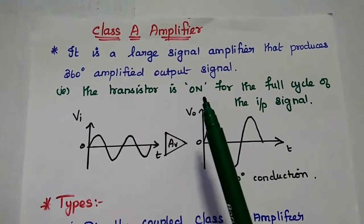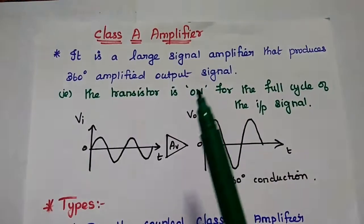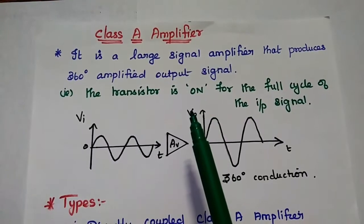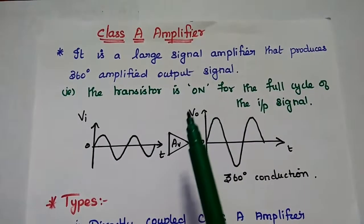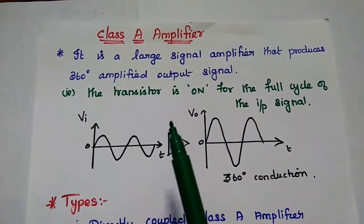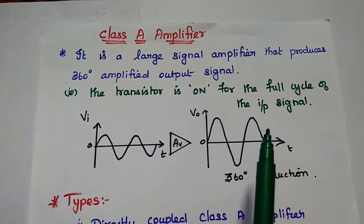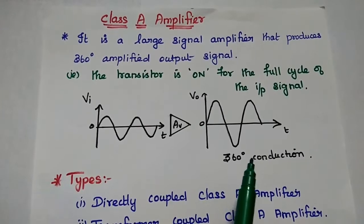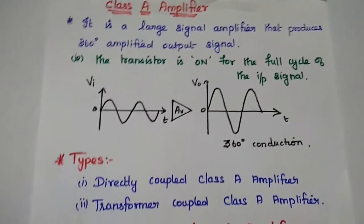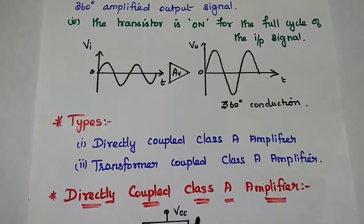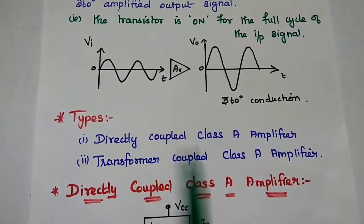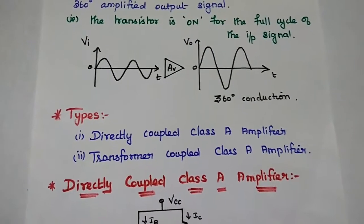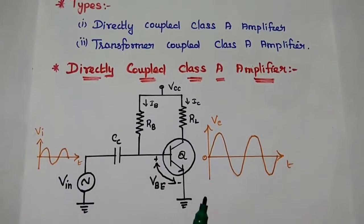Dear students, now we are going to discuss Class A amplifier in detail. Class A amplifier is a large signal amplifier which produces a 360-degree amplified output signal. That means the transistor is on for the full cycle of the AC input signal. There are two types of Class A amplifiers: directly coupled and transformer coupled. In this video lecture we are going to discuss the directly coupled Class A amplifier.